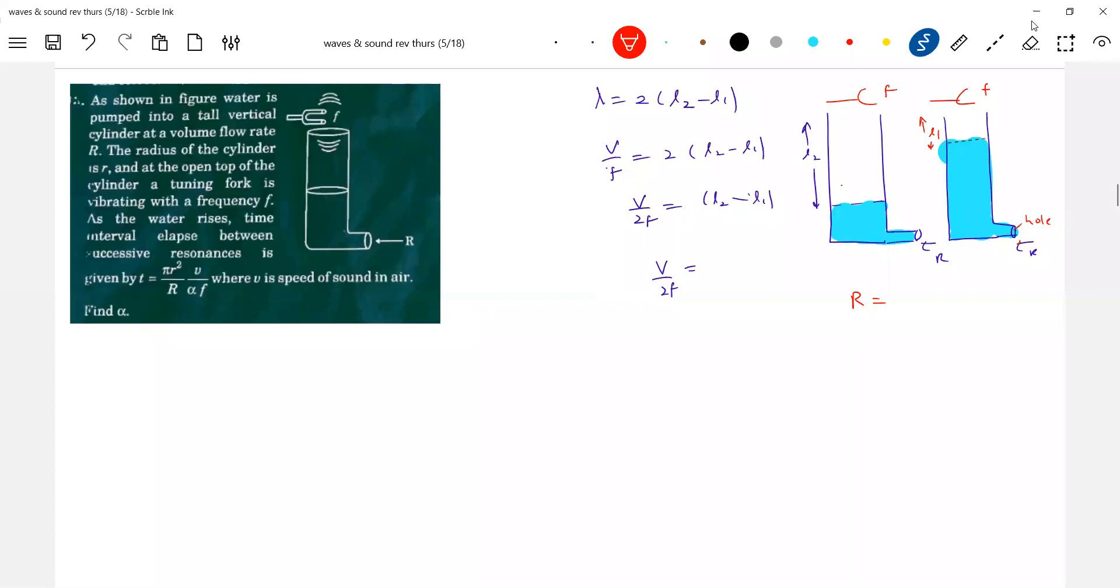So the flow rate R should be equal to L2 minus L1 into radius of the pipe, pi R square, pi R square into T. Divide it by time T. Okay, this is R here.